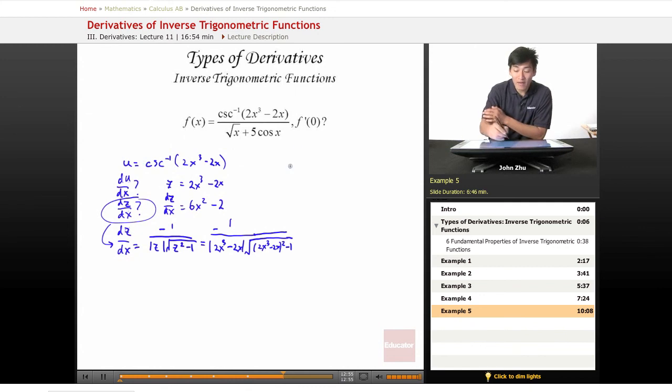Well, we have another term here on the bottom on the denominator. That's square root of x plus 5 cosine of x. Well, to take the derivative of this,